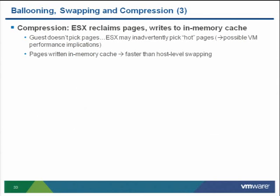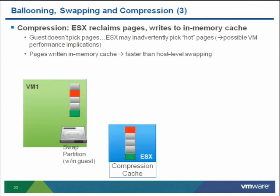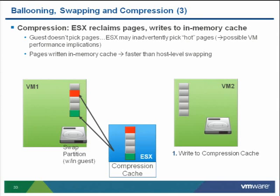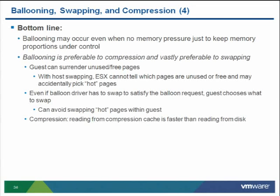Memory compression, new in vSphere 4.1, sits between ballooning and swapping. ESX takes two pages from VM1 that can be compressed into one page within an in-memory compression cache, then gives those pages to VM2. If VM1 needs those pages again, decompression is much lower overhead than disk access since the compression cache is in memory. Summary: ballooning is polite and least intrusive; host-level swapping is very intrusive and can cause performance concerns — avoid it at all costs. If you're seeing consistent host-level swapping, add more memory or use vMotion.